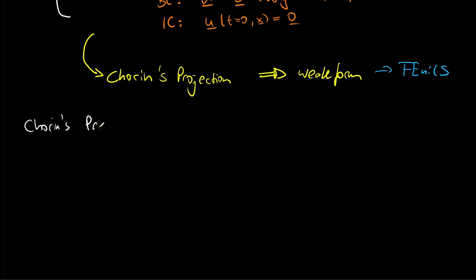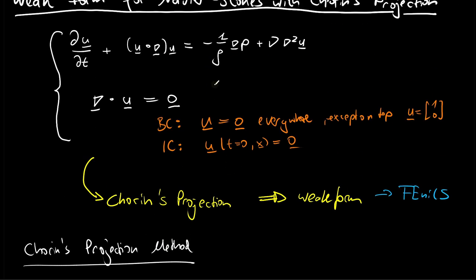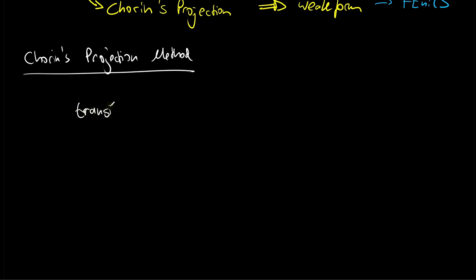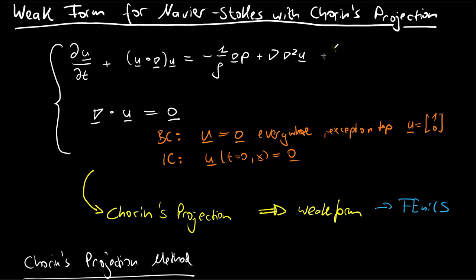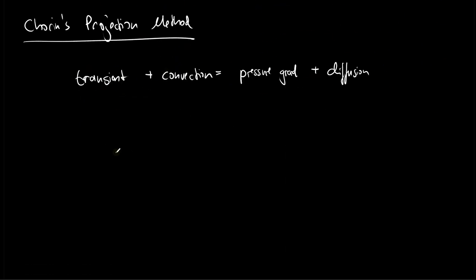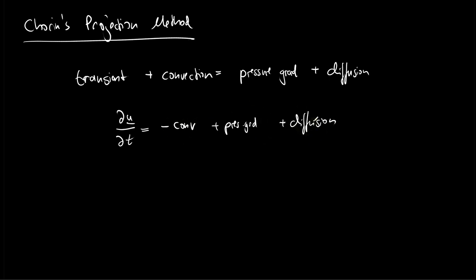The idea of Chorin's projection method is to look at all the components in the momentum equation individually. We have a transient term (the temporal derivative), plus a convection term. On the right-hand side, we have a pressure gradient and a diffusion term. There could also be a forcing term f, but I won't consider it here. There is only one term with a temporal derivative, so rearranging gives: du/dt = −convection + pressure gradient + diffusion. The idea is to treat this as an ODE and split the right-hand side operators, applying convection, pressure gradient, and diffusion individually.